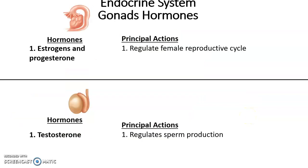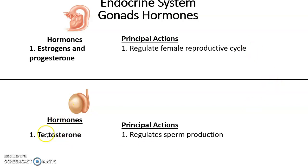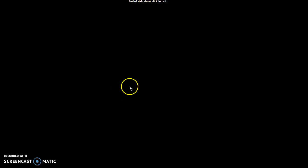Our gonads also produce hormones. The ovaries produce estrogen and progesterone, which are very important for regulating the female reproductive cycle. The testes produce testosterone, which has many functions including regulating sperm production. And that is it for this lecture.